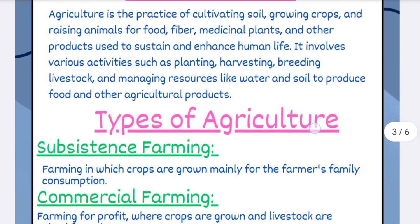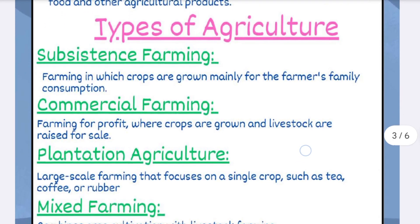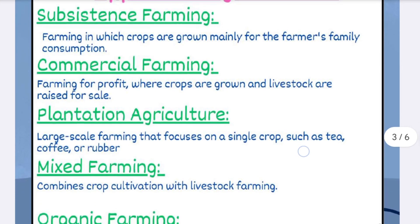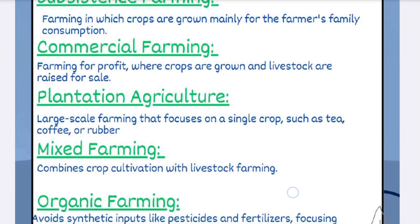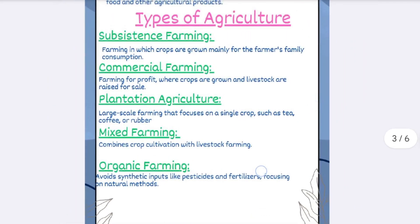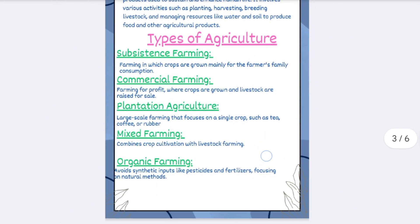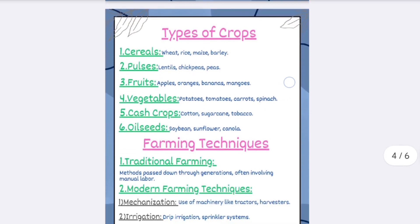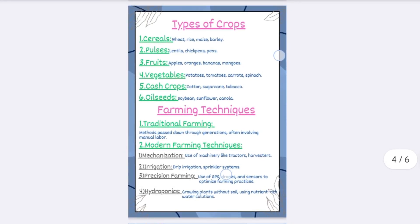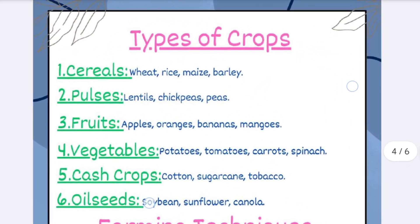Then, types of agriculture: the first one is subsistence farming, then commercial farming, plantation agriculture, and the last one is organic farming. After that, types of crops and farming techniques — let's have a close look.